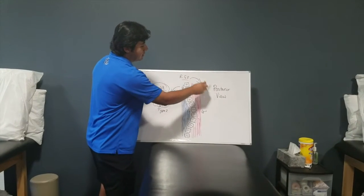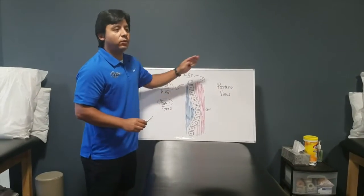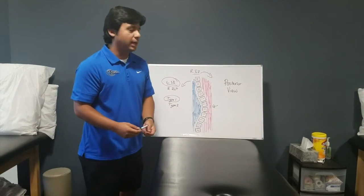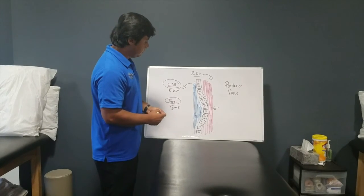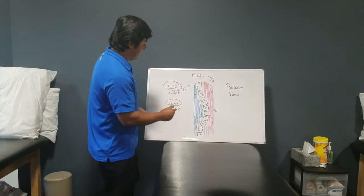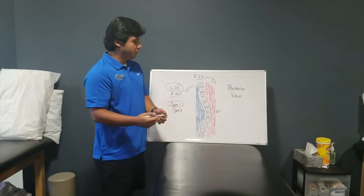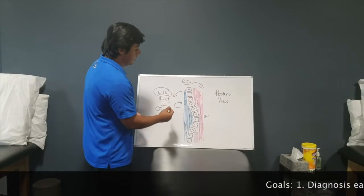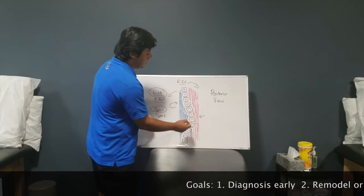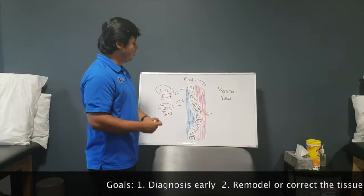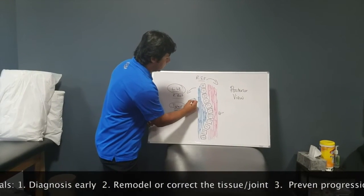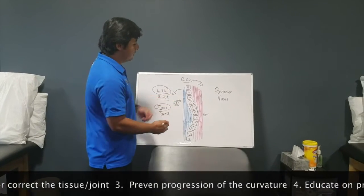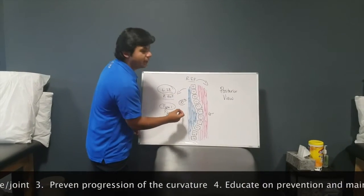We don't necessarily need to take the spine into a full right side bend immediately — we just need it to come back to neutral to start realigning the spine. We do similar things in the transverse plane: because we already have a right rotation, we exaggerate that right rotation with rotational exercises to stimulate the dormant muscles and muscle spindles, creating a stretch reflex to activate those muscles and help realign the spine.